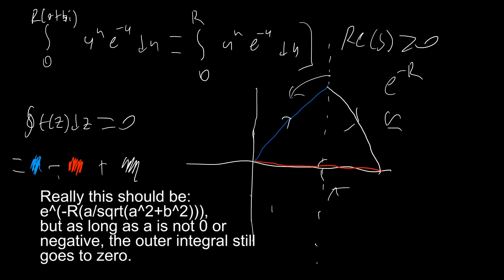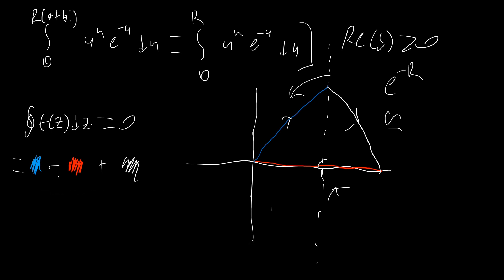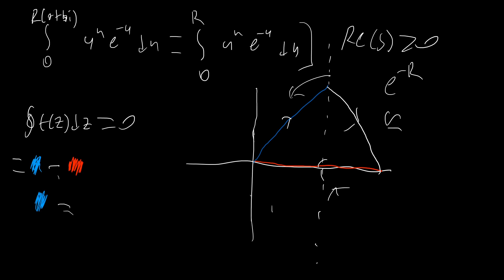So our white integral essentially will always go to zero. The only times it won't go to zero are: (a) our function of t has some kind of exponential growth, or (b) the integral extends all the way into the left half-plane, which is why we need the real part of s to be greater than zero. So in this case the white integral disappears, and zero equals blue minus red, which means blue equals red.